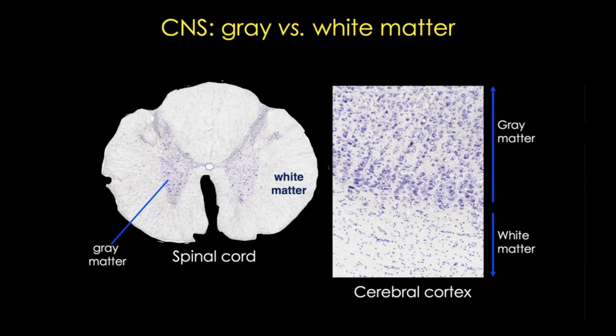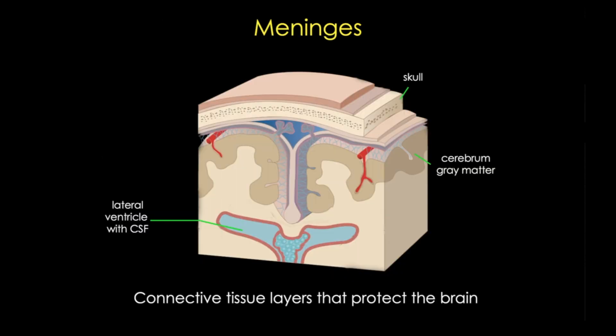The meninges are a set of connective tissue layers that provide protection for the brain. Cerebrospinal fluid, or CSF, is produced in ventricles and bathes and cushions the cells of the brain. The brain contains these ventricles lined with ependymal cells, and they communicate with the central canal that extends into the spinal cord.